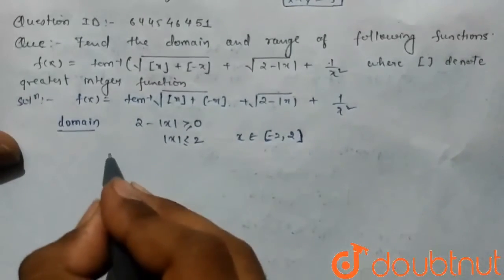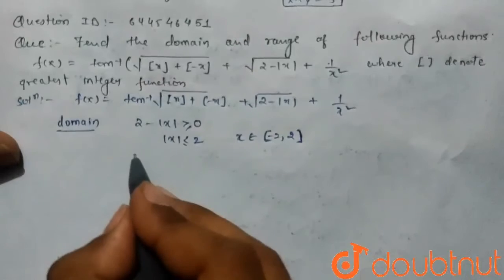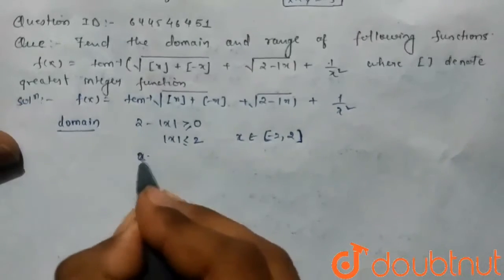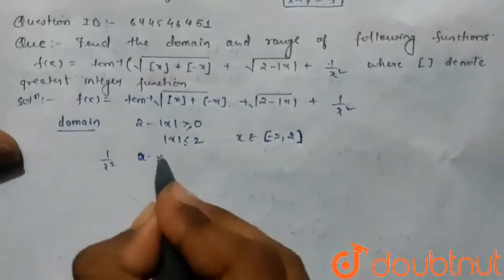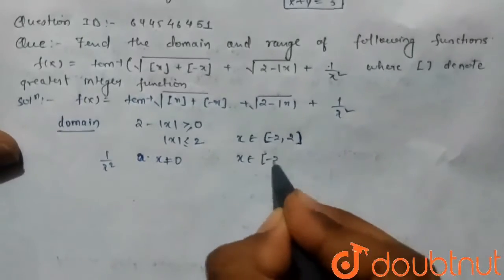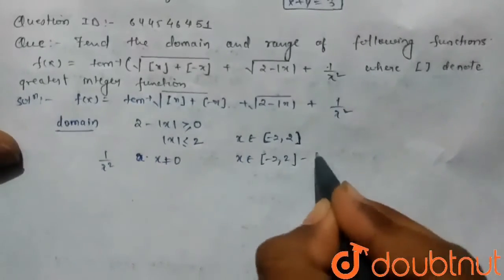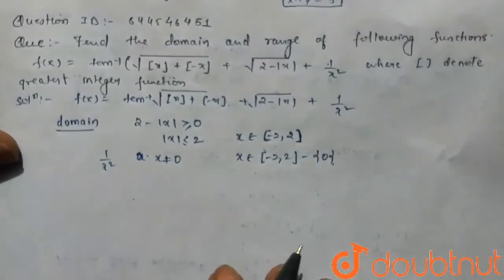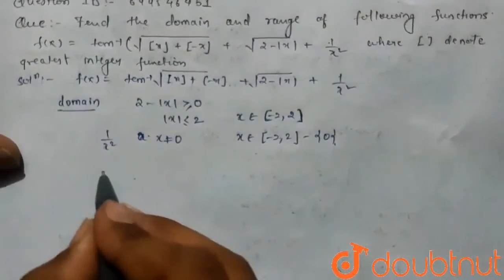We know that in denominator we can't have zero, so for 1 by x squared, x is not equals to zero. So x belongs to minus 2 to 2 except zero. And in third case we know that the greatest integer function...